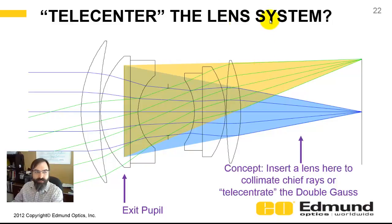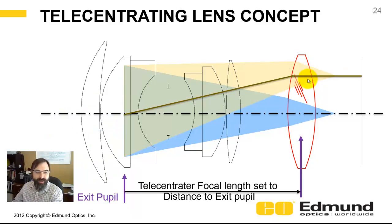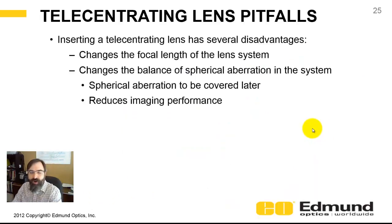Now I want to talk about telecentering the lens. The concept is we insert a lens to collimate the chief rays, or to place the exit pupil at infinity. I just overlaid a red lens. How you do this: if you make this lens' focal length equal to the distance to where the exit pupil is, you're essentially collimating your chief ray. There are some pitfalls — not only does it change the optical system, but it's going to change the balance of spherical aberration, which will reduce your ability to image well.